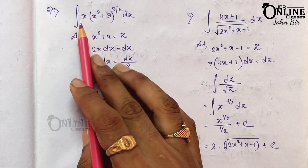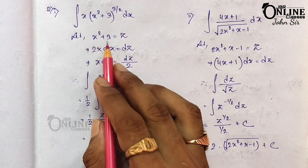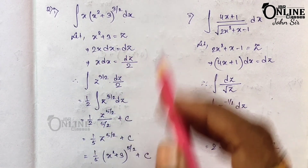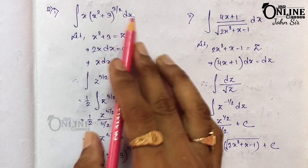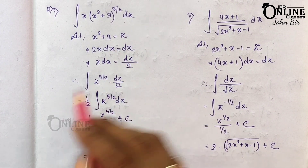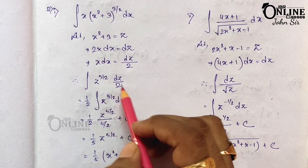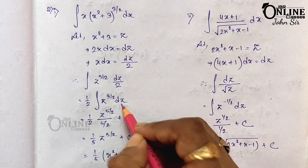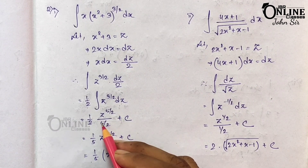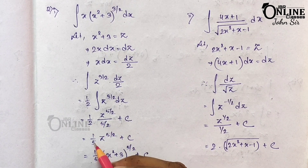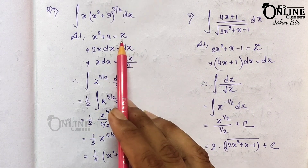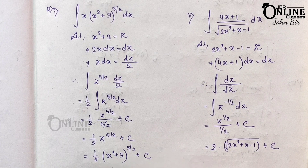Problem 2.1: ∫x · (x² + 3) dx. Let x² + 3 = z, then 2x dx = dz, so x dx = dz/2. The integral becomes (1/2)∫z^(3/2) dz. That equals (1/2) · z^(5/2) / (5/2) + C. The 2s cancel, giving (1/5) z^(5/2) + C = (1/5)(x² + 3)^(5/2) + C.